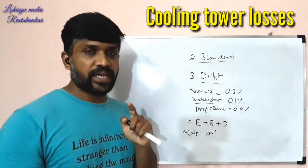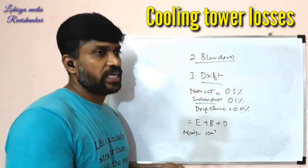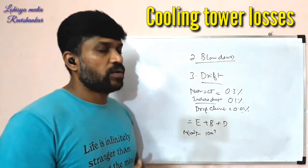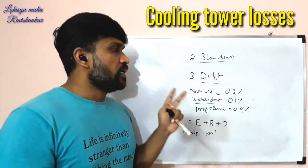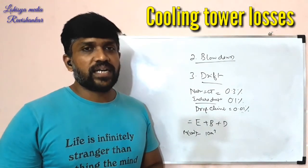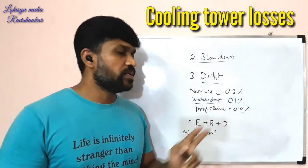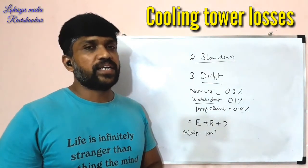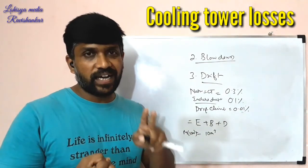Water parameters are chlorides, silica, hardness, iron, alkalinity, etc. Even in cooling towers, you can maintain phosphate levels. Cooling towers have three main losses: evaporation loss, blowdown, and drift. If you learn from many industries, you can maintain some quality of water and equipment. Maintaining cooling water quality leads to great efficiency of the cooling tower.